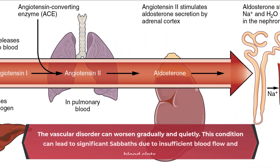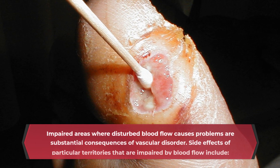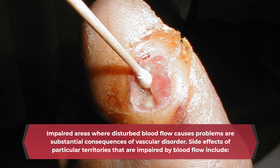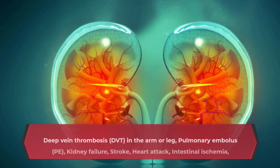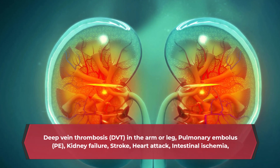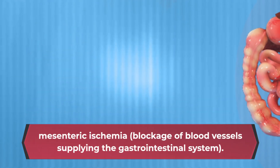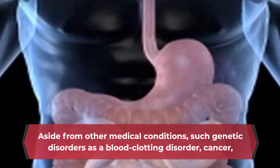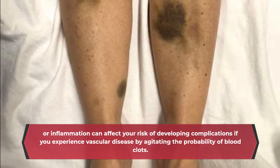The vascular disorder can worsen gradually and quietly. This condition can lead to significant setbacks due to insufficient blood flow and blood clots. Side effects of particular territories impaired by blood flow include deep vein thrombosis (DVT) in the arm or leg, pulmonary embolus (PE), kidney failure, stroke, heart attack, intestinal ischemia, and mesenteric ischemia — blockage of blood vessels supplying the gastrointestinal system. Aside from other medical conditions, genetic disorders such as a blood clotting disorder, cancer, or inflammation can affect your risk of developing complications from vascular disease by increasing the probability of blood clots.